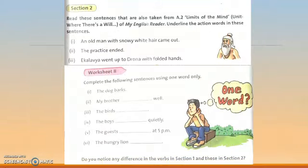Now come to Section 2. Read these sentences also taken from the unit in your English reader. Underline the action words in these sentences. First: 'An old man with snowy white hair came out.' What action? He came — 'came out.' 'The practice ended' — 'ended.' 'Eklavya went up to Drona with folded hands' — 'went up' and 'folded.'